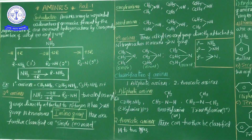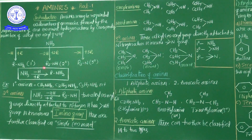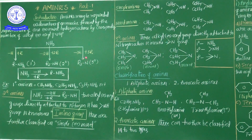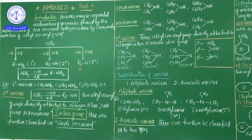For two-degree or secondary amines, two hydrogens are removed from ammonia and replaced by two alkyl or two aryl groups, forming the R₂-NH group. For three-degree or tertiary amines, all three hydrogens are removed and replaced by three alkyl or aryl groups, giving R₃N — commonly known as tertiary amines.